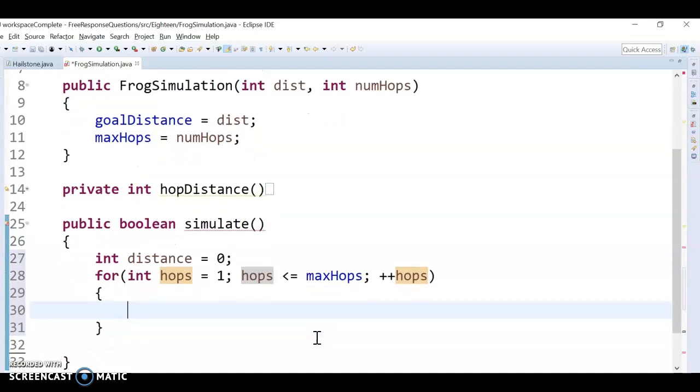And so each time I'm going to hop. So when I hop, I'm going to call the hop distance method. That's going to return a different distance each time, potentially negative. And I just want to add that to my distance. So I'm going to update my distance and plus equal whatever the next hop is.